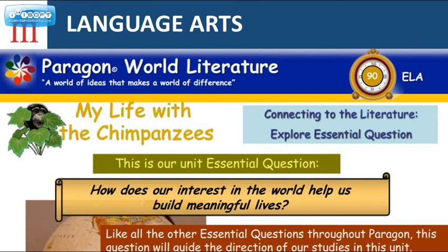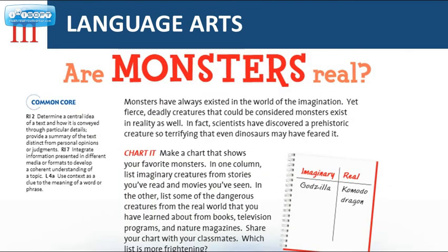For language arts, Mosaica Online also implements Paragon World Literature, which is a literature-based language arts curriculum that parallels the content of our Paragon Humanities program. In each quarter of Paragon Humanities, students approach a historical time and place with an essential question. Paragon World Literature supports and broadens this study by introducing companion literature from the time and place in question. In addition, students in grades 6–8 will study a variety of literature and expository text studies, writing activities, vocabulary strategies, grammar skills, and communication lessons, all aligned to the Common Core State Standards.